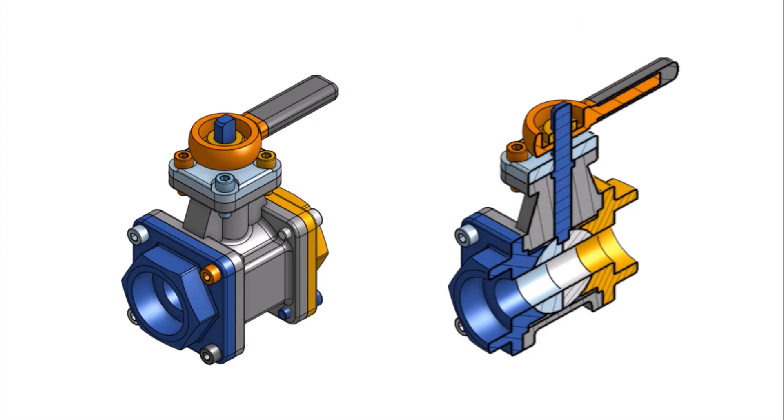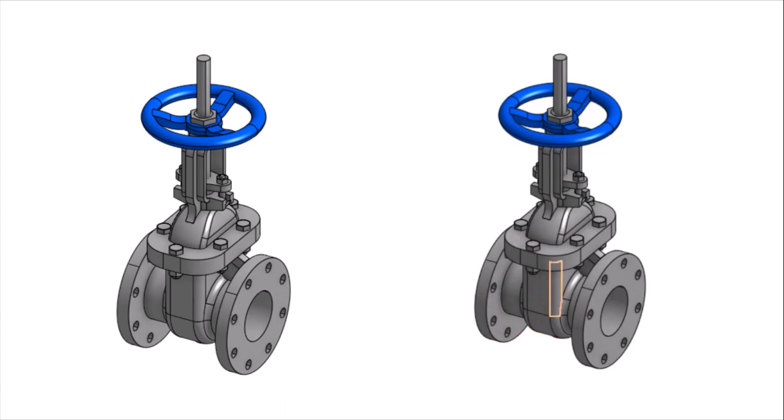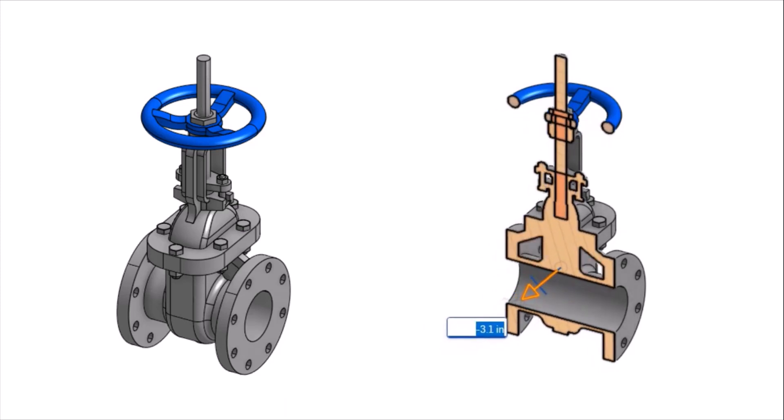Sometimes a part is so complex that we get several hidden lines overlapping on each other and it becomes very hard to visualize the part geometry correctly. The sectioning process allows us to remove a portion of an object and view the inside features of a part that are of interest to us.